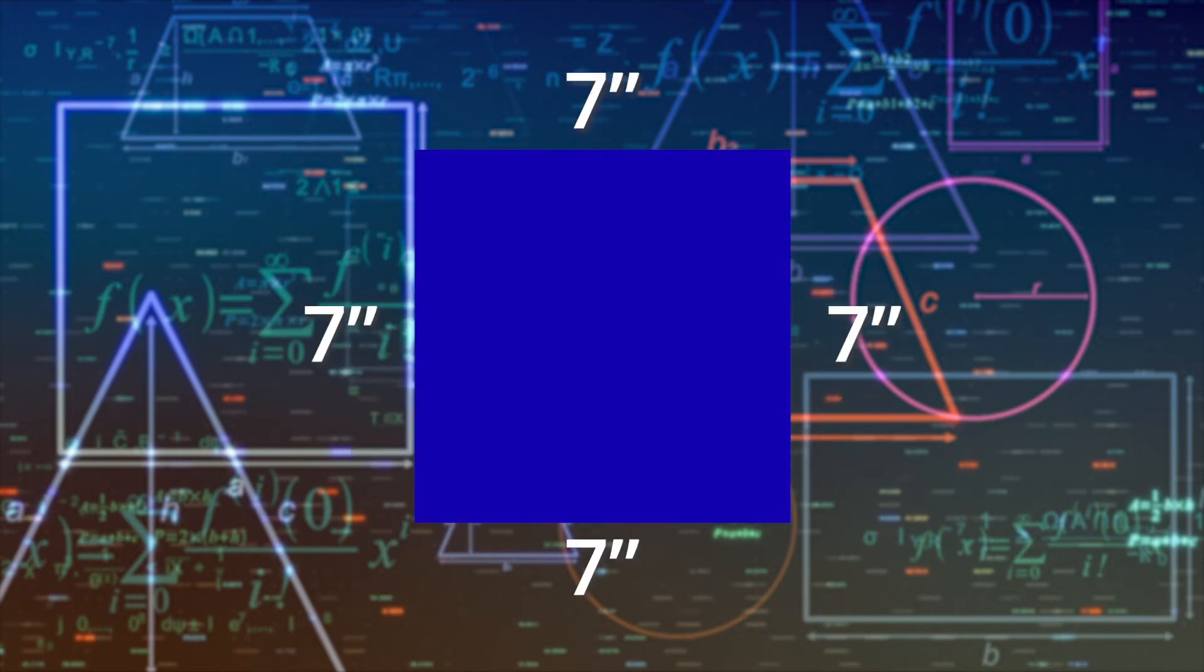And using our square that has 4 sides that are all 7 inches, the area is 7 times 7, or 49 inches. Make sense?